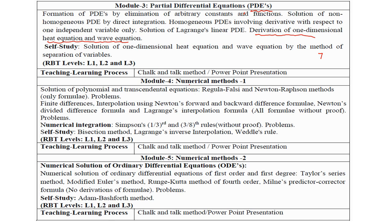In module 4, numerical methods, I will not tell you to omit any topic. You should study all the topics — it is an easy topic this semester. Definitely you will score 20 marks. Similarly, in module 5, which is a continuation of numerical methods from module 4, you should not leave any topic and you can score a maximum of 20 marks.